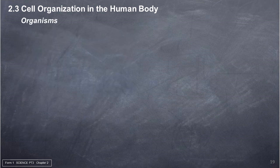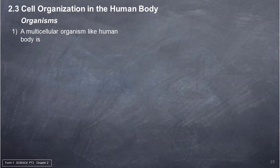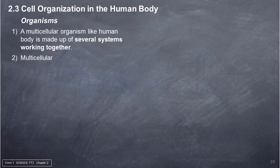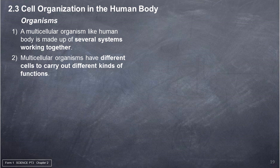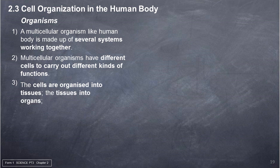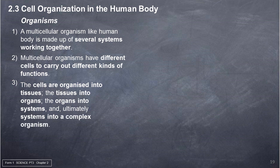Organisms. 1. A multicellular organism like the human body is made up of several systems working together. 2. Multicellular organisms have different cells to carry out different kinds of functions. 3. The cells are organized into tissues, the tissues into organs, the organs into systems, and ultimately systems into a complex organism.